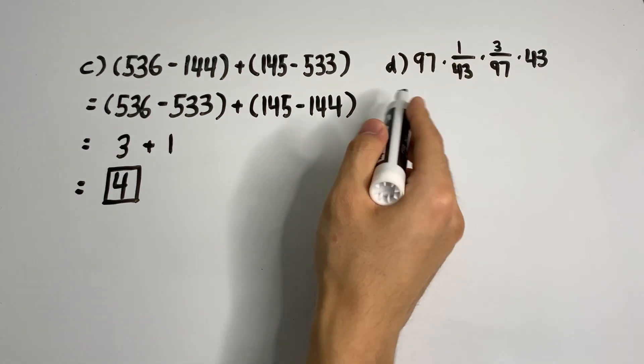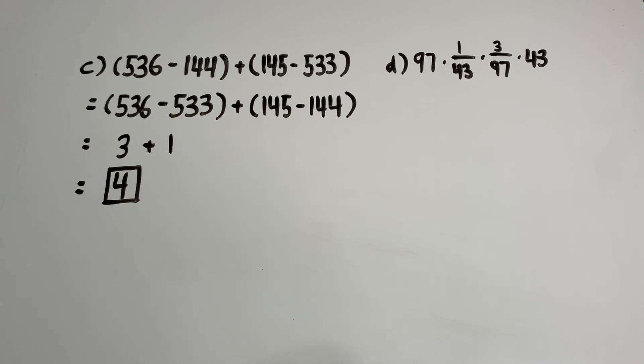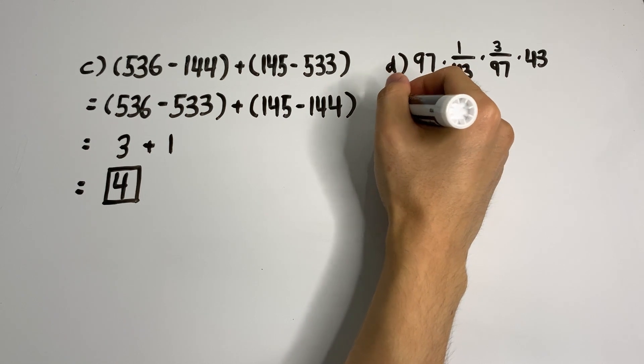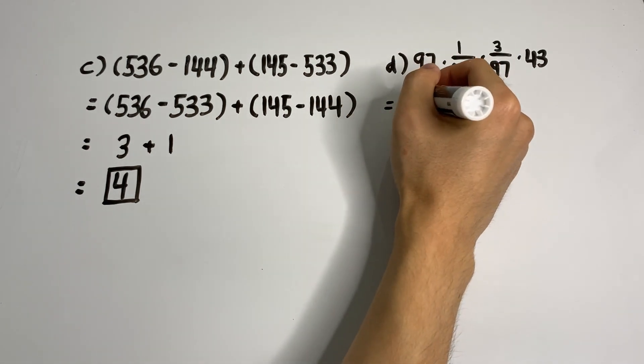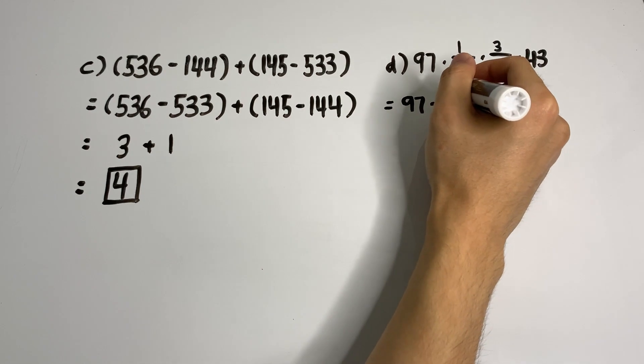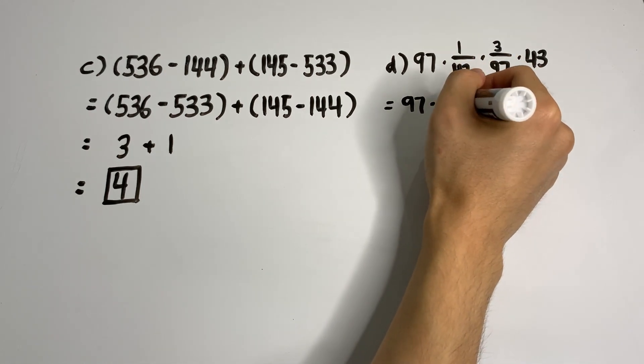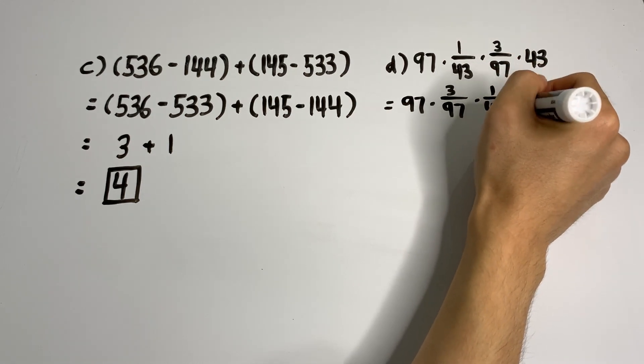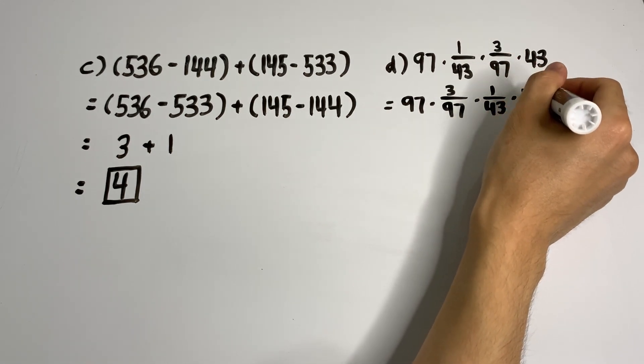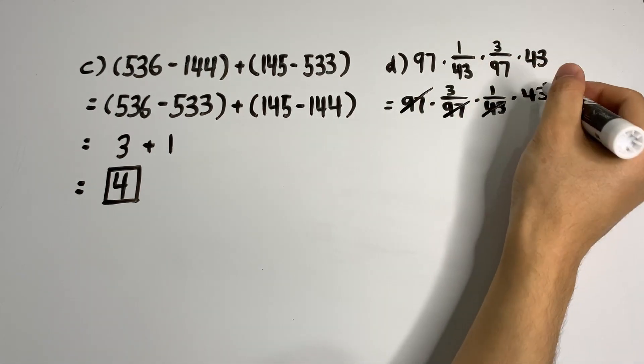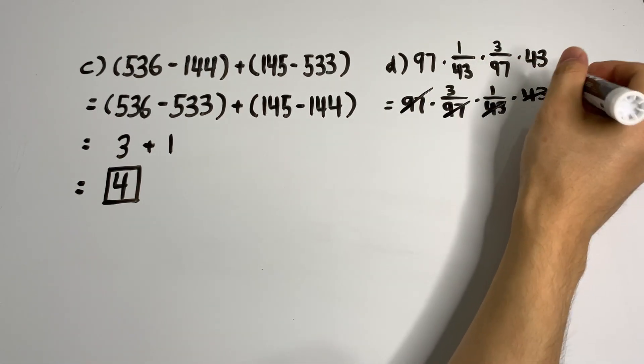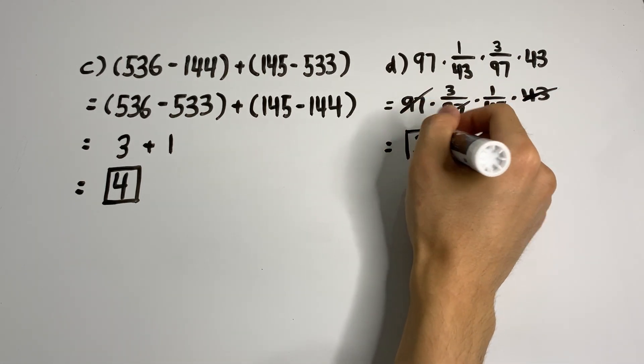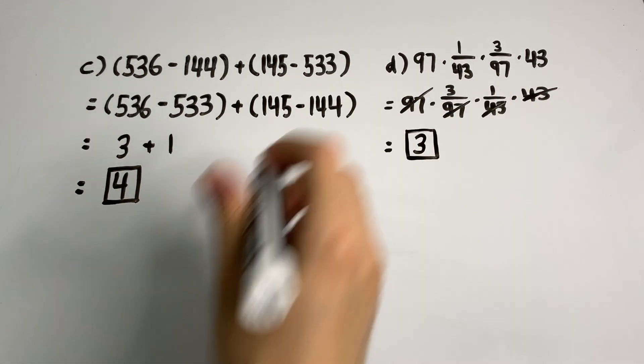For this question, 97 times 1 over 43 times 3 over 97 times 43, let's rearrange things to make things easier for us. We get a whole bunch of cancellation and the final answer is 3.